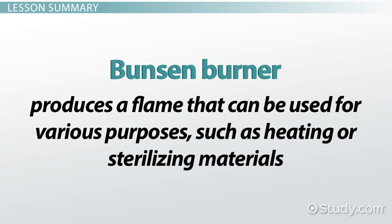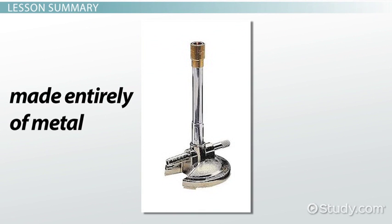The Bunsen burner is a piece of scientific lab equipment that produces a flame that can be used for various purposes, such as heating or sterilizing materials. There are several different parts that users should be familiar with. These parts are all made of metal.